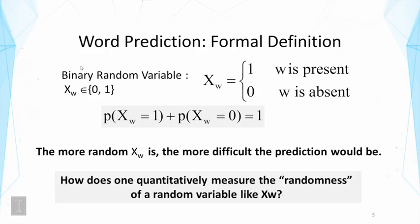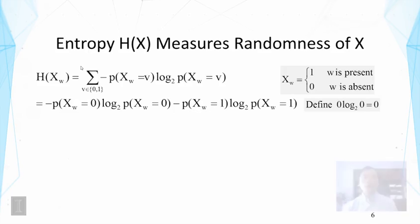So the intuition we discussed earlier can be formally stated as follows: the more random this random variable is, the more difficult the prediction would be. Now the question is, how does one quantitatively measure the randomness of a random variable like X_w? How in general can we quantify the randomness of a random variable? And that's why we need a measure called entropy.